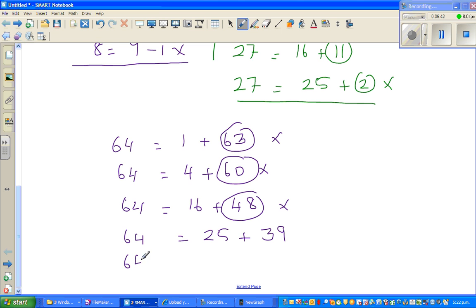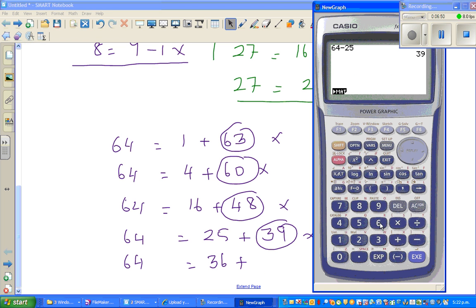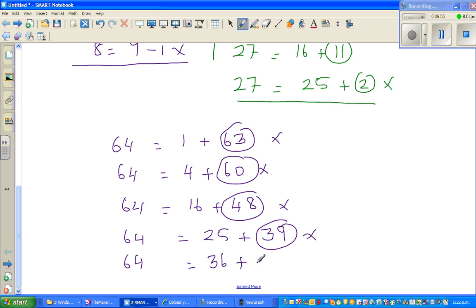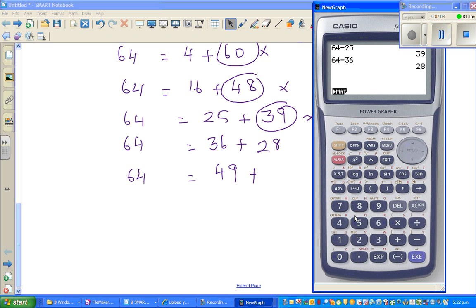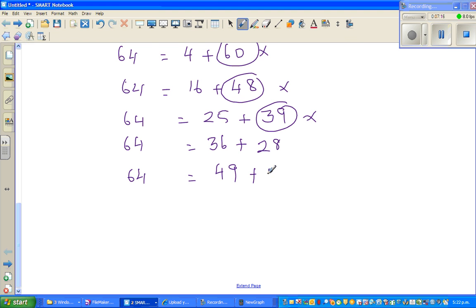The next number is 36. 64 minus 36, my brain is not working, it's 28, so not working. 64, the next square number is 49. So 64 minus 49 is 15. So plus 15, not working.